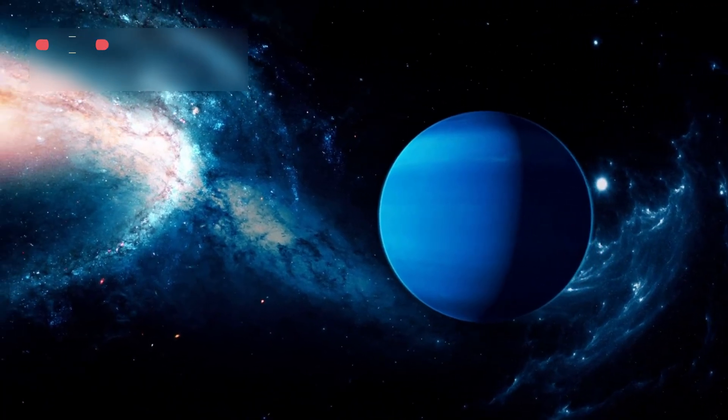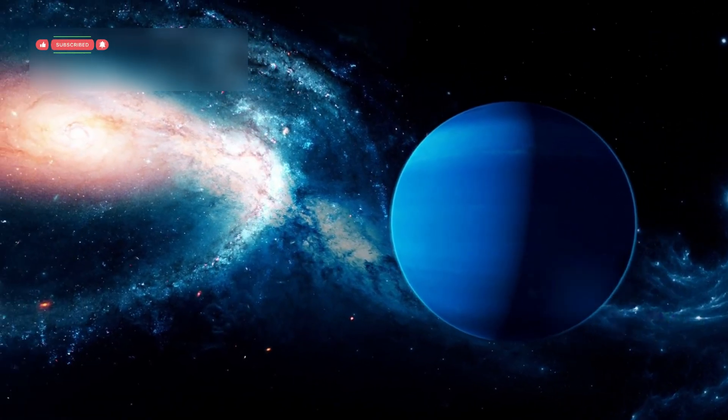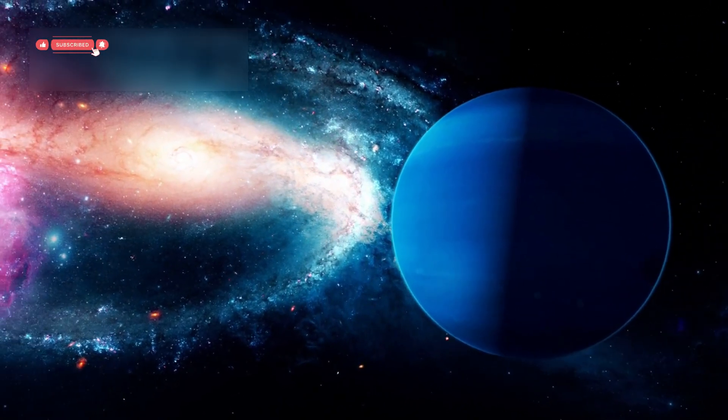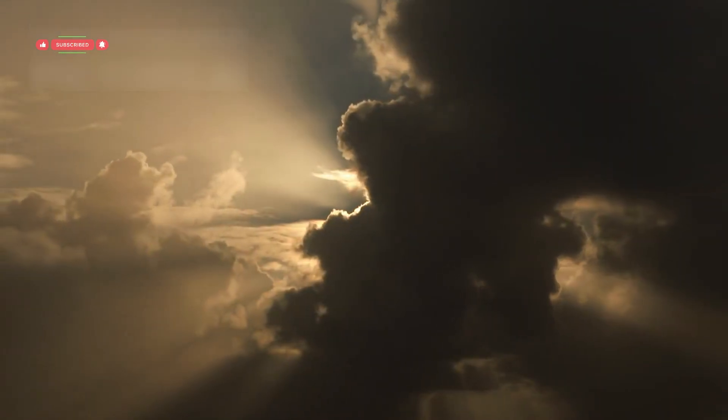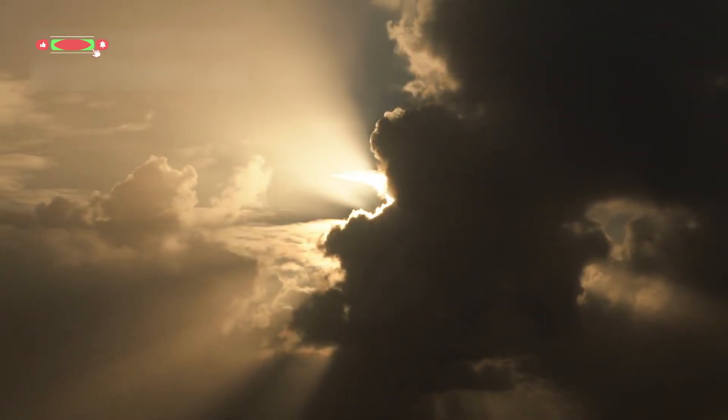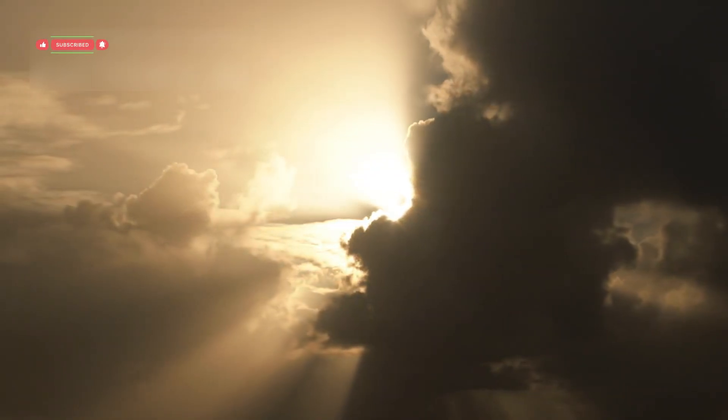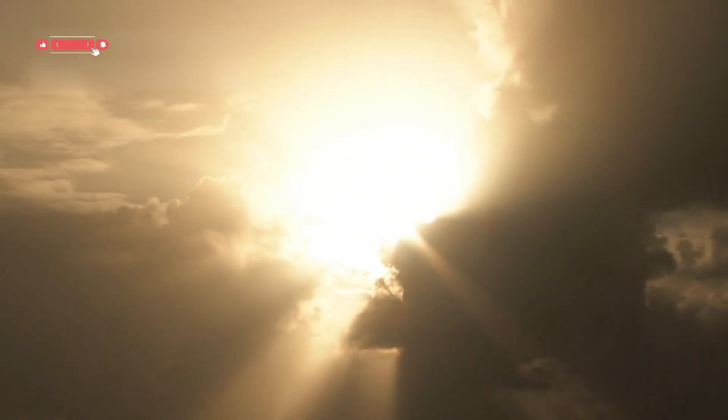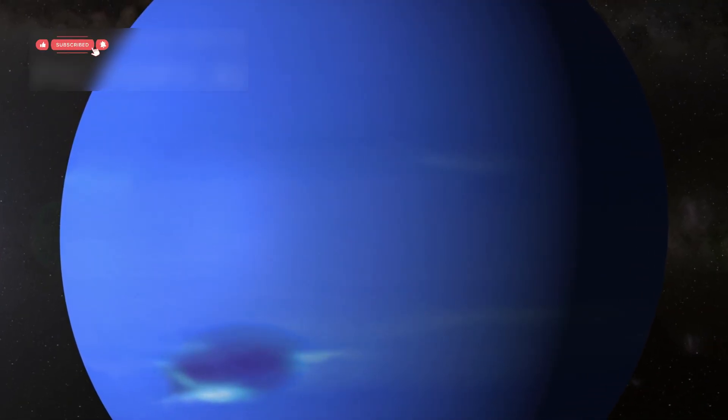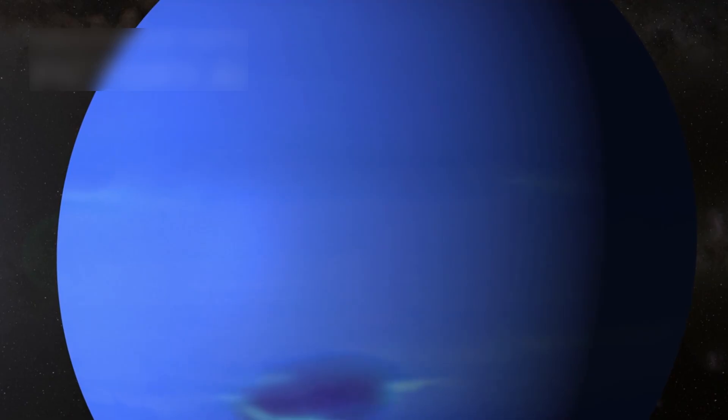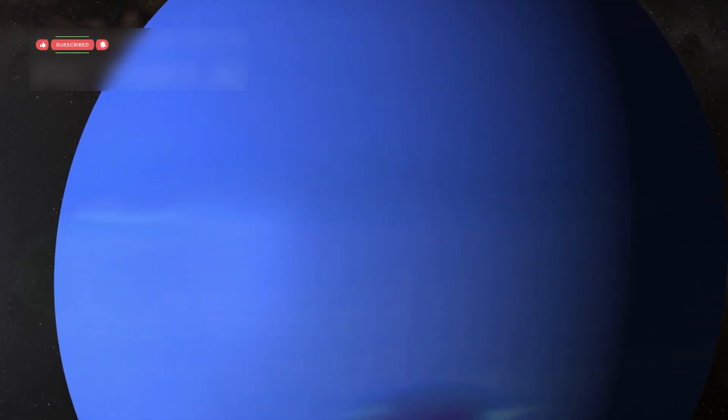In 1989, Voyager 2 reached Neptune and took the first close-up photos of this distant blue planet. The images showed Neptune's deep blue color and revealed the great dark spot, a massive storm as large as Earth's diameter. Voyager 2 also discovered that Neptune has a system of rings and measured winds blowing over 2,000 km per hour, the strongest in the solar system.